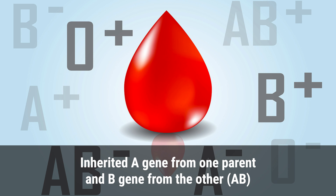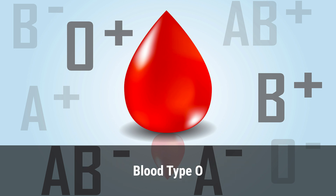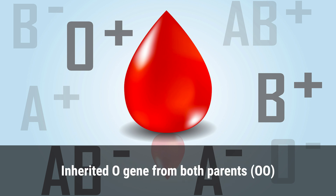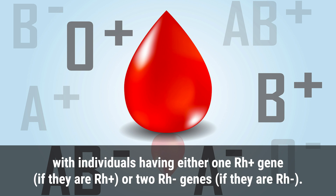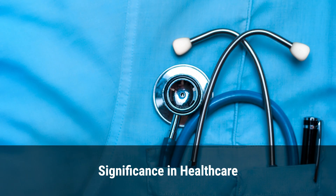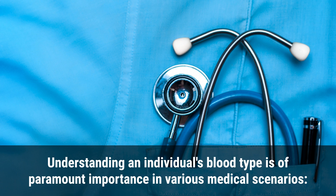Blood type AB is inherited with an A gene from one parent and a B gene from the other (AB). Blood type O is inherited with an O gene from both parents (OO). Similarly, the Rh factor is inherited, with individuals having either one Rh positive gene if they are Rh positive, or two Rh negative genes if they are Rh negative.